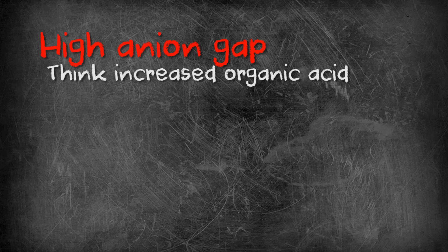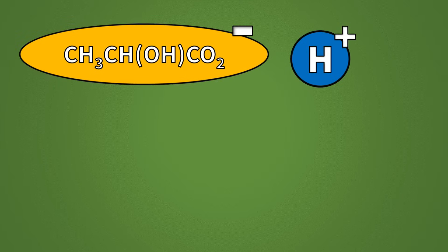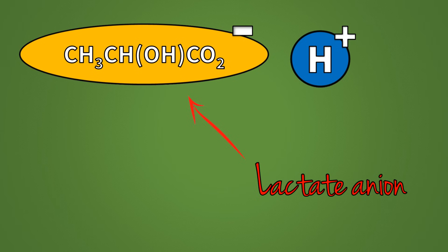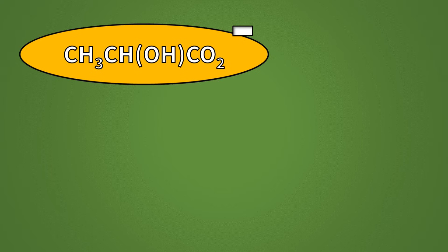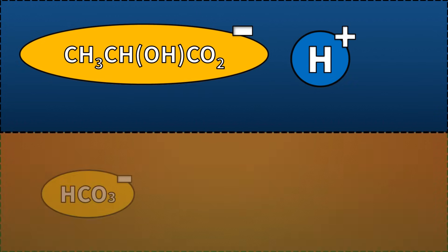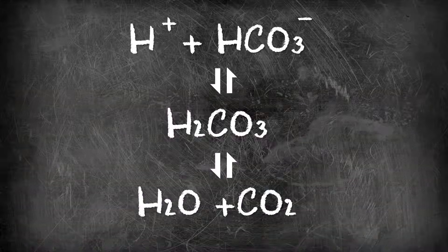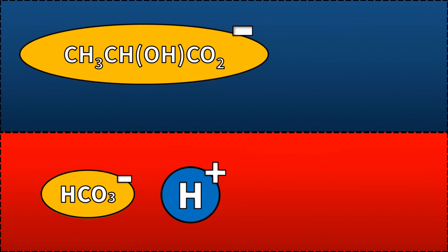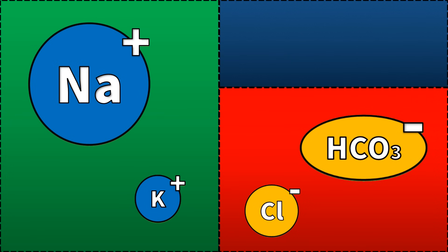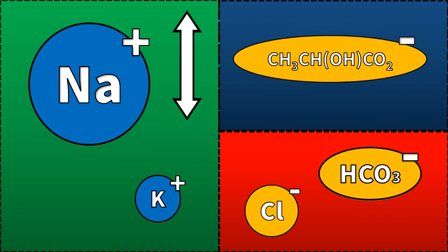We'll begin with the high anion gap acidosis. To put it simply, this is due to an increase in organic acids in the bloodstream. Take lactic acid for example. Lactic acid in solution gives us H+ protons and a corresponding negatively charged anion, lactate. Note that this anion is not accounted for in our anion gap calculation — it belongs in our mystery box. In a lactic acidosis, there is an increased presence of H+ protons and lactate in the serum. The excess protons are buffered by bicarbonate to form carbonic acid and then water and CO2. This buffering process lowers the levels of bicarbonate in the serum. Serum remains electroneutral — there's the same amount of negative charge floating around — but there's more lactate and less bicarb accounting for it. Anion gap increases as an increased proportion of the negative charge is not accounted for by our anion gap calculation.